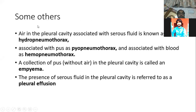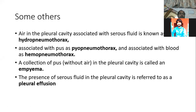There are also other associated conditions. If air in the pleural cavity is associated with serious fluid, we call it hydropneumothorax. If there is pus in the pleural cavity along with air, it is called pyopneumothorax. If there is blood, it is called hemopneumothorax. The collection of pus without air in the pleural cavity is called an empyema.